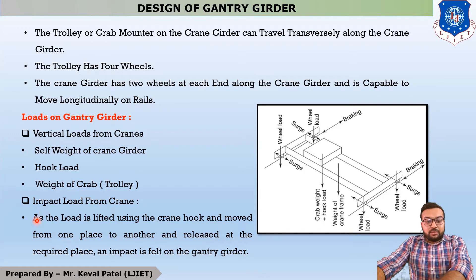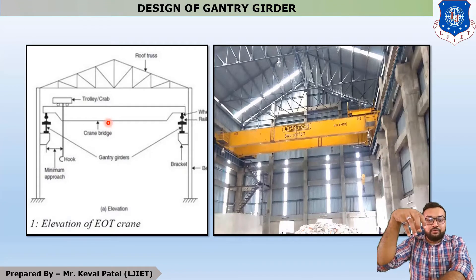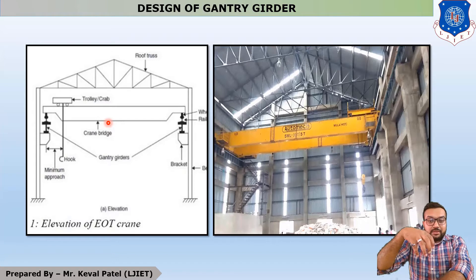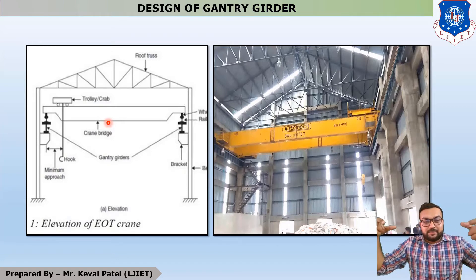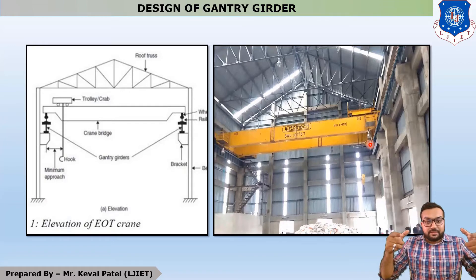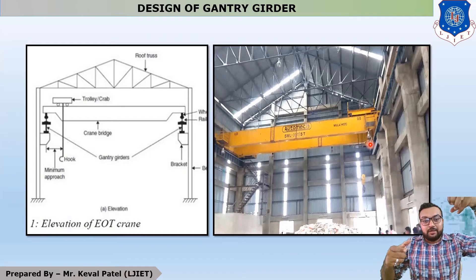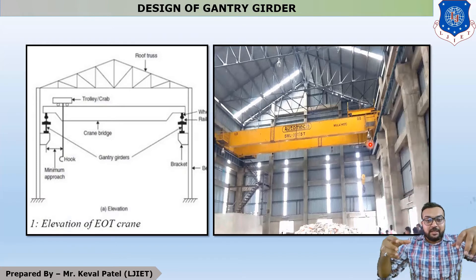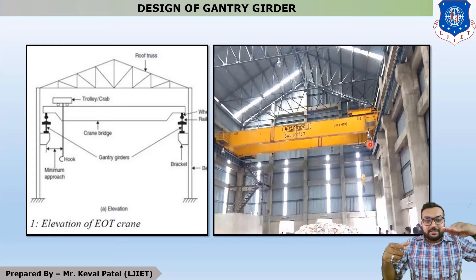The second load is impact load from the crane. Whenever you collect any material, there is some vibration load, and this load is subjected on the four wheels. You can see there are four wheels — wheel number one, wheel number two, wheel number three, and wheel number four — two wheels on both the gantry girders. When you collect any load or put down any load, these four wheels are subjected to impact load. This impact load is considered as a vibration load and it is a continuously moving load.